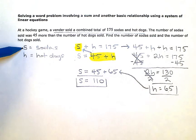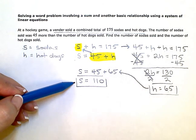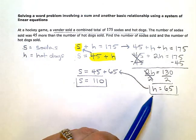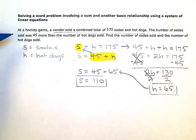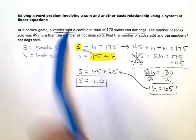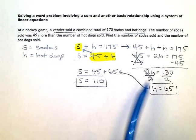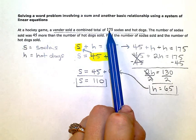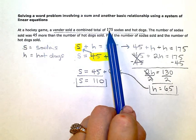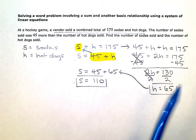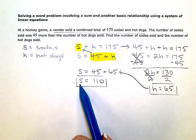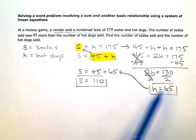So the number of sodas was 110, the number of hot dogs was 65. If I go back to my original information here, if I add these two together, I do get 175 for a combined total of the sodas and hot dogs. And the sodas is equal to the hot dogs plus 45. See you guys next time.